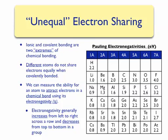Electronegativity also decreases from top to bottom in a group, due to the effects of shielding. Therefore, electronegativity increases from the bottom left-hand side to the top right-hand side of the periodic table, making fluorine the most electronegative atom. Note that no electronegativities are calculated by Pauling for noble gases, because noble gases very rarely form compounds with other atoms.